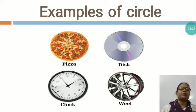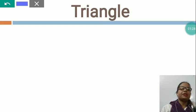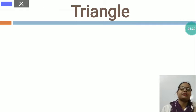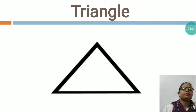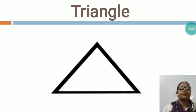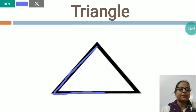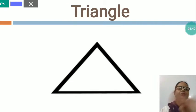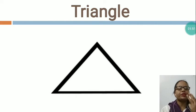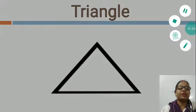Sweet children, I would like to teach you another shape. Now this is TRIANGLE. Now you can see this is the picture of triangle. There are three sides of the triangle — first, second, and third. So how many sides? There are three sides and three corners.